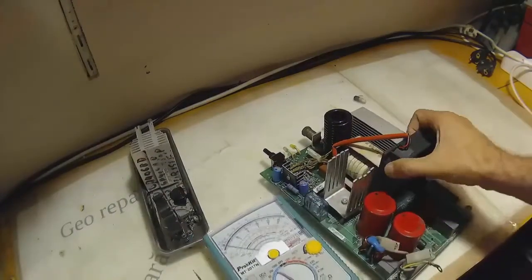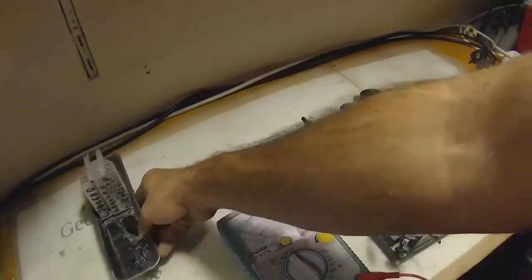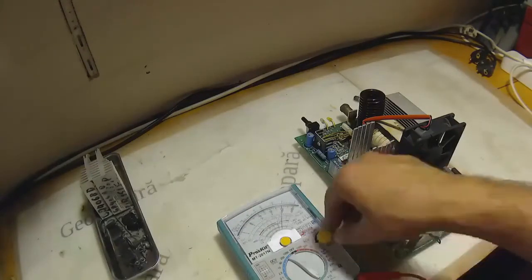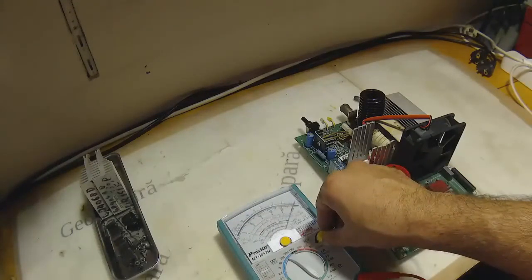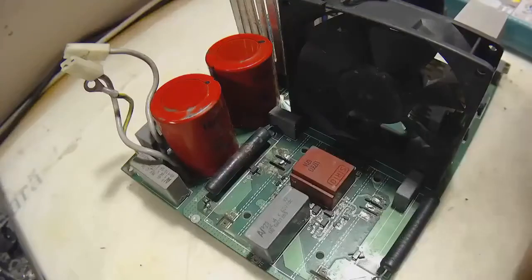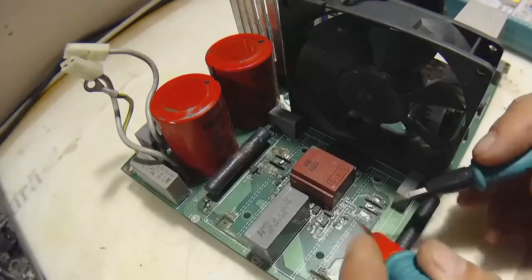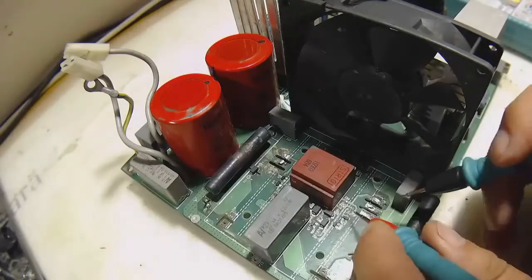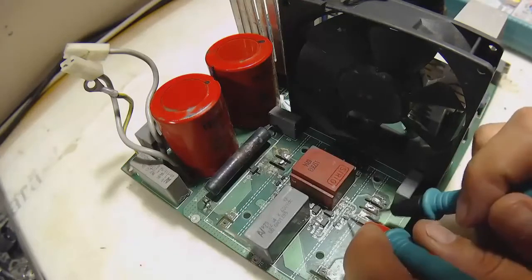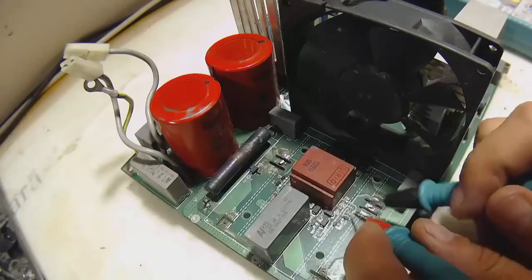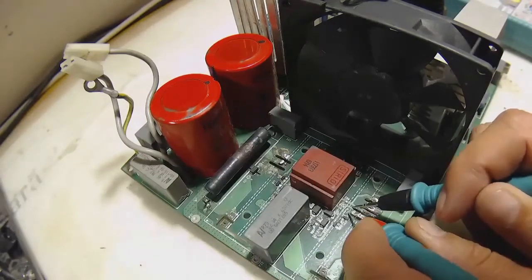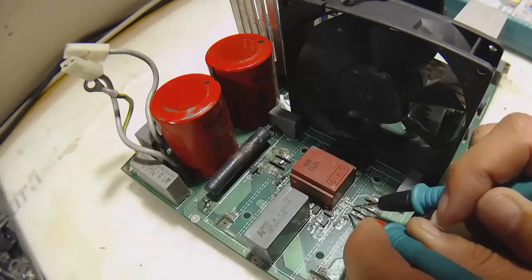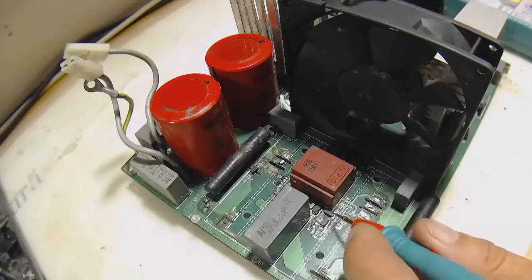So I got my multimeter. This is the gate for the IGBT, this is the gate resistor, it's burnt. You can hardly see what was written on it.